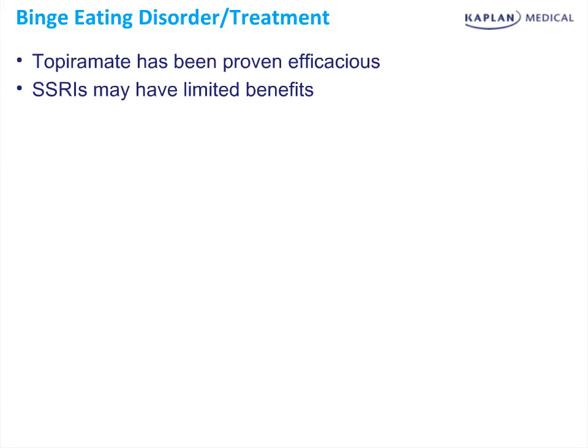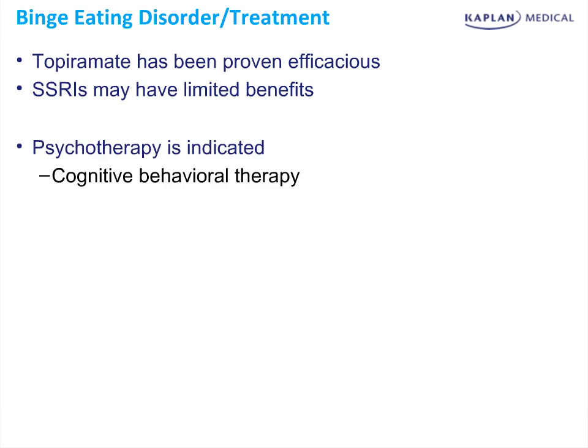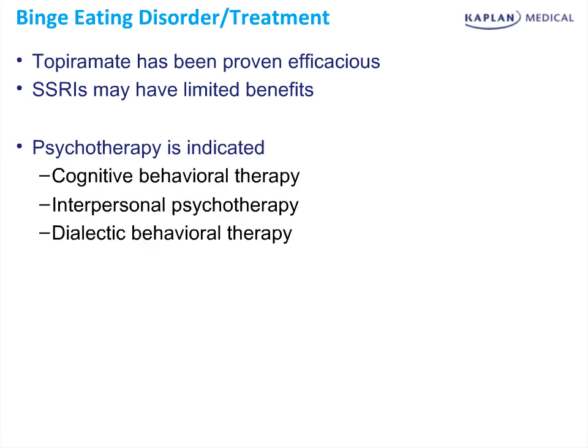For treatment of binge eating disorder, Topiramate has been proven efficacious and is the go-to treatment. SSRIs may have limited benefit, so for the exam, your best initial therapy is Topiramate. Psychotherapy is also indicated, including CBT or cognitive behavioral therapy, interpersonal psychotherapy, as well as DBT — dialectic behavioral therapy.